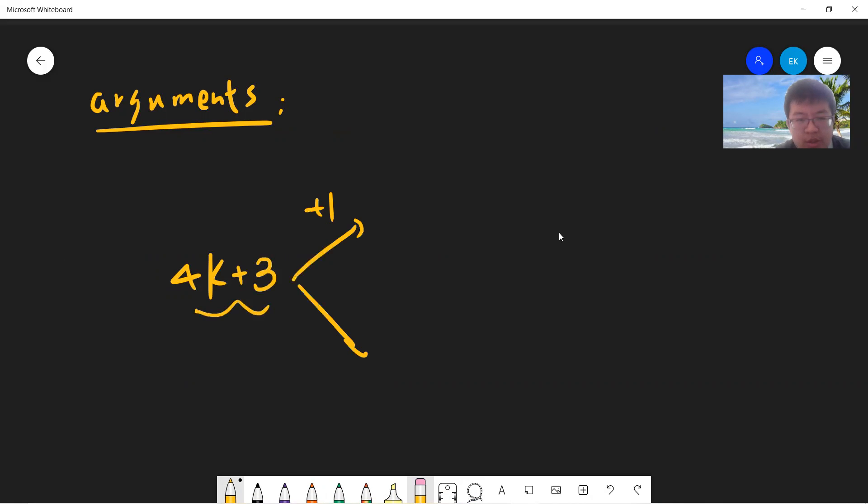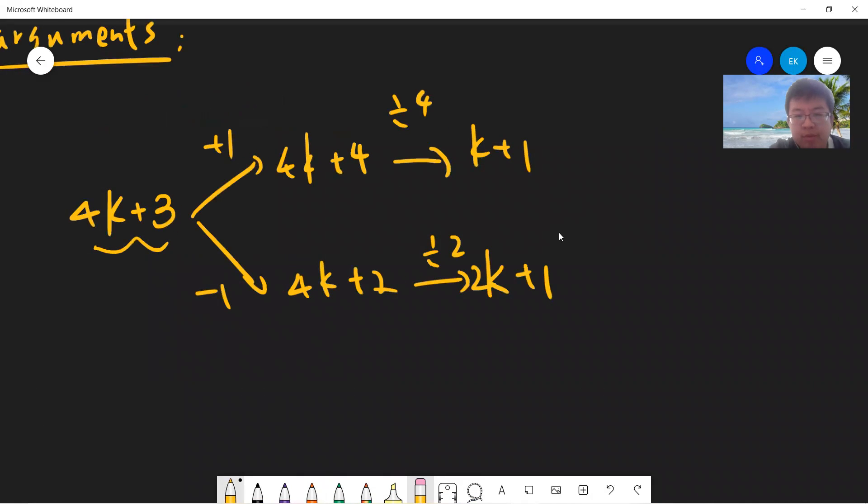So if you start from 4k plus 3, you have two ways. If you plus 1, become 4k plus 4, and then you can divide by 4, because after two steps, it always becomes 4k plus 1. And then minus 1, you become 4k plus 2. Then for this one, there's no way. You only divide it by 2, become 2k plus 1. So now you still have two steps.